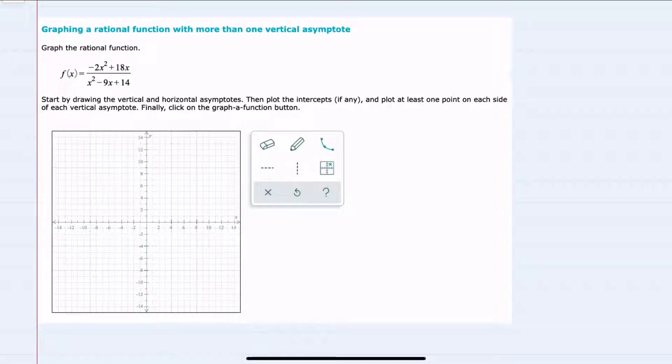In this video, I'll be helping you with the Alex problem type called graphing a rational function with more than one vertical asymptote.